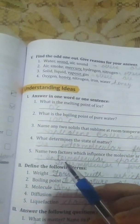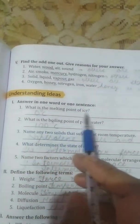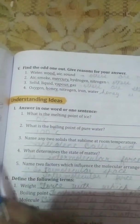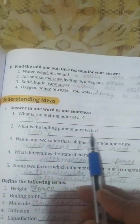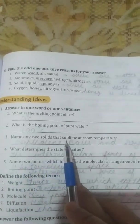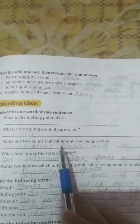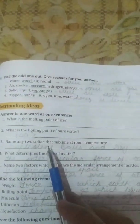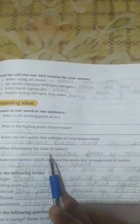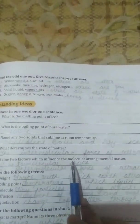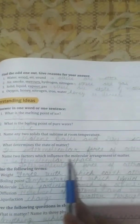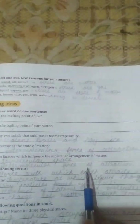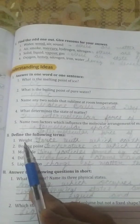Now one word, this part also you have to write in the book. What is the melting point of ice? That is zero degrees Celsius. What is the boiling point of pure water? That is 100 degrees Celsius. Third, name any two solids that sublime at room temperature. That is naphthalene balls, generally we call them moth balls or the phenyl balls, and dry ice. Fourth, what determines the state of matter? The intermolecular force of attraction. Fifth, name two factors which influence the molecular arrangement of matter. So first one is the intermolecular space and second one is the intermolecular force of attraction.